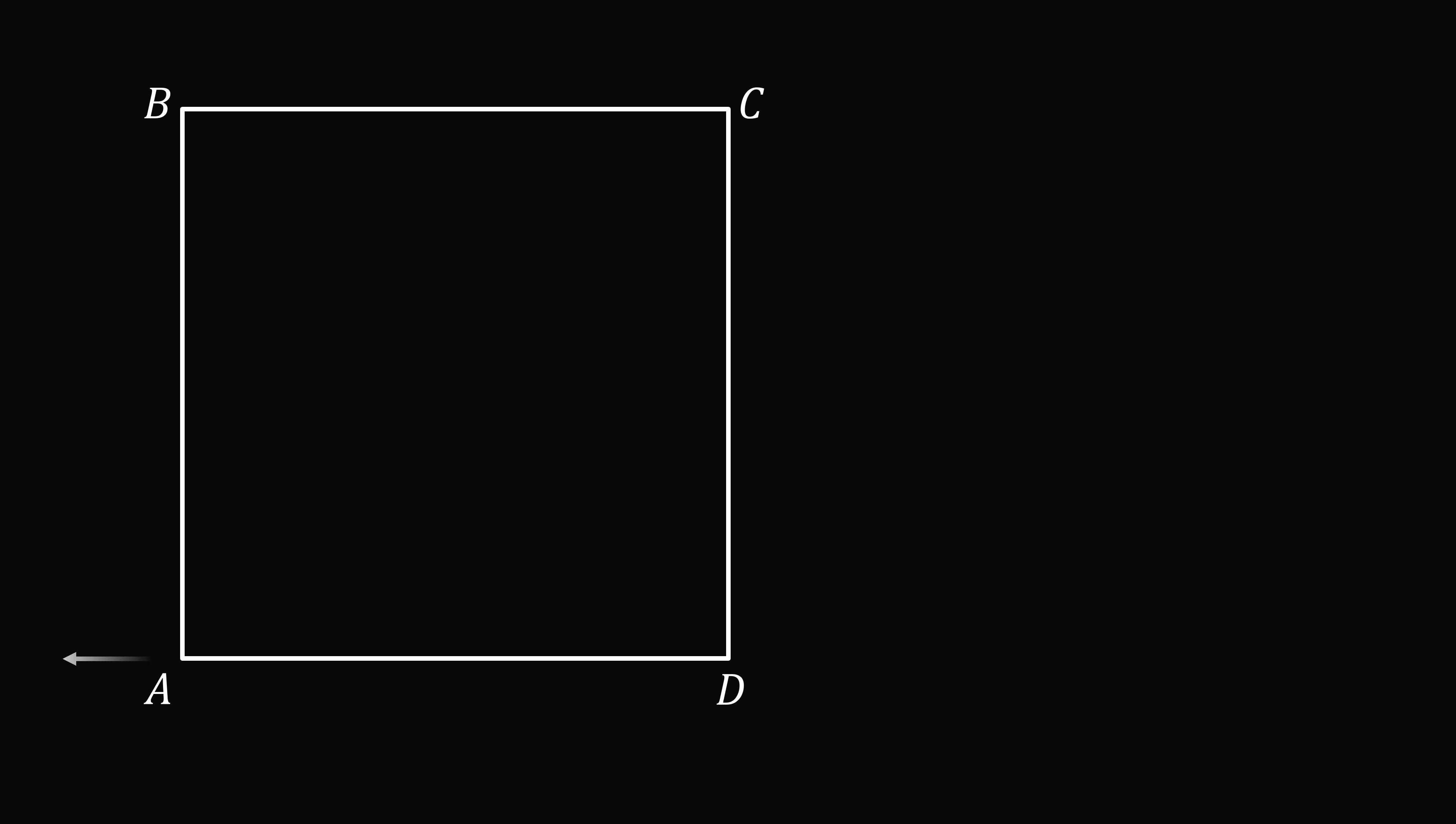We have our square. So let's set up a coordinate system where side AD is on the x-axis, and side AB is on the y-axis. Let's say the square has a side length equal to 1, so that point D is at (1,0). We have a point P in the interior, and we'll label this as (x,y). So we construct the triangle APD.